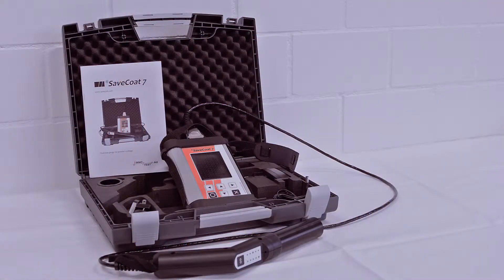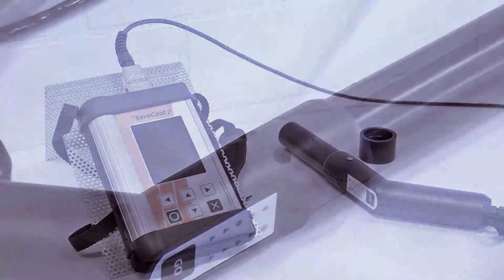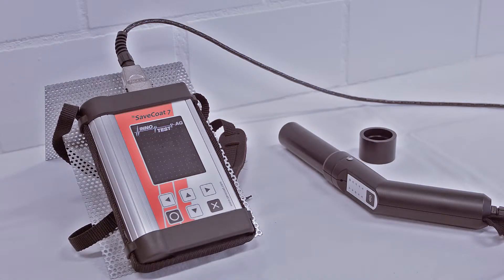The Safecode 7 gauge is delivered in a case with a detailed manual, the sensor gun, a reference block, power supply, a USB cable, a shoulder strip and a hand loop.